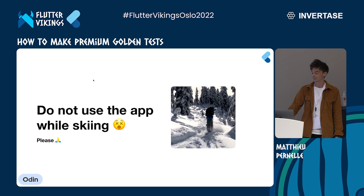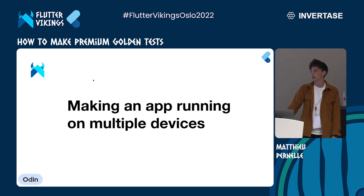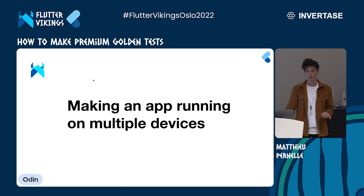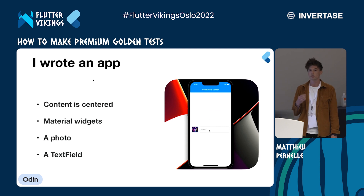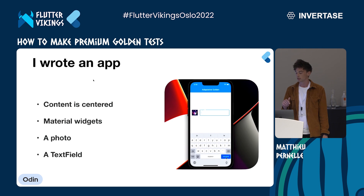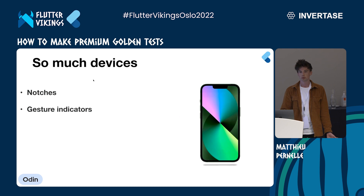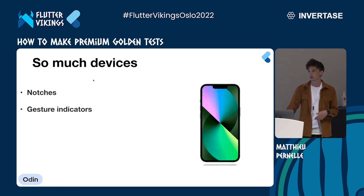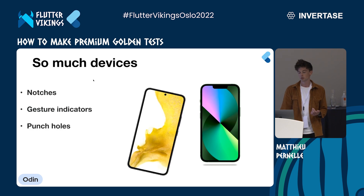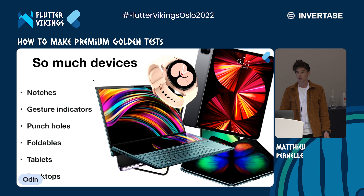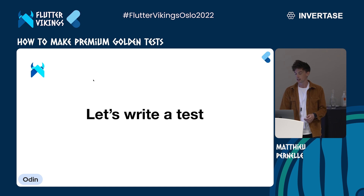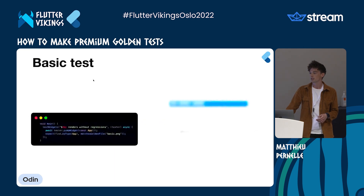As Flutter developers, we target multiple platforms and devices. For example, I created an app — it's fairly basic: there are material widgets, the content is centered, we can see a text field, a photo, and when I tap on the text field a keyboard appears. This app should run on iPhones which have notches and gesture indicators, on Androids which often have punch holes, on foldable phones, tablets, laptops, and even watches. So how do I know if the app will look good on every device?